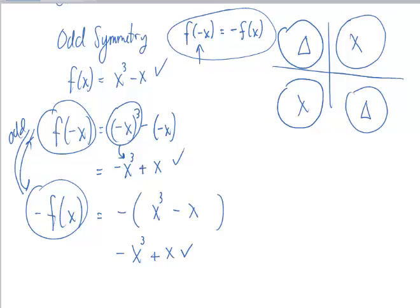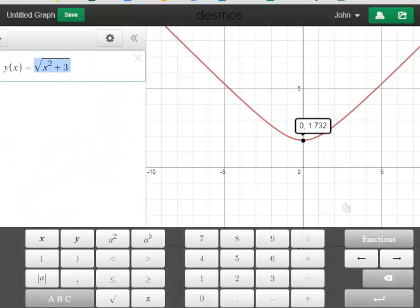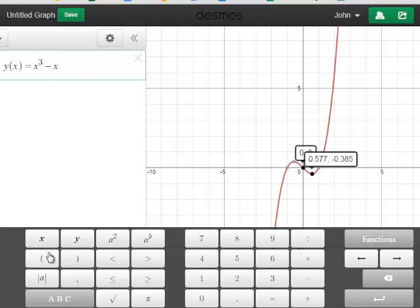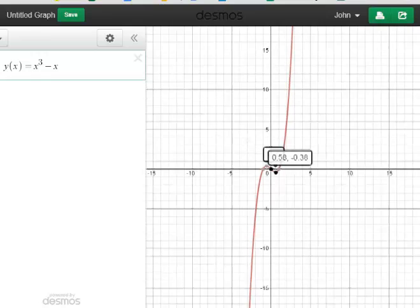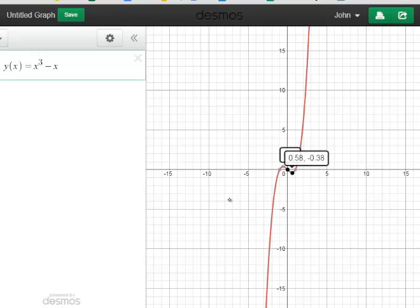Let's check that out on Desmos. I'm going to erase this and put in x cubed minus x. And as you can see, whatever is happening in the one quadrant over here is happening identically in this quadrant. So, it's like there's rotational symmetry and our function rule is verified by our graph.